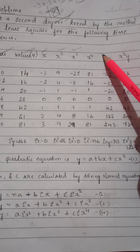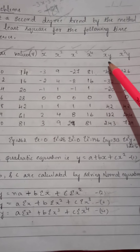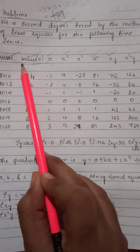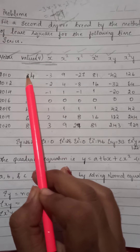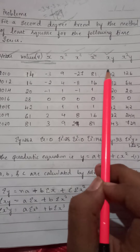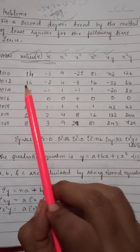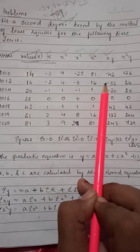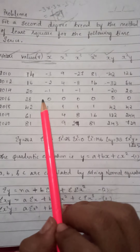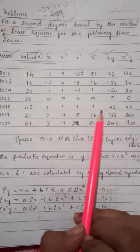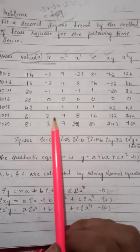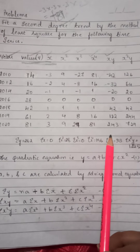The next column will be xy — that is x × y. For x = −3, y = 14: plus × minus = minus, so −42. For x = −2, y = 16: −32. For x = −1, y = 20: −20. For x = 0, y = 28: 0. For x = 1, y = 42: 42. For x = 2, y = 61: 122. For x = 3, y = 81: 243.